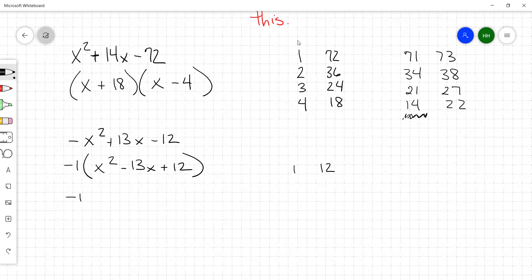So, negative one times we've got x and x. Now, this 1 and 12, they need to multiply to a positive, but they need to add to a negative. When that's the case, they're both going to be negative. So, it's x minus 1 times x minus 12. So, key point here is when you see this negative, you've got to factor out a negative one, and then you can treat the problem like every other problem. So, when you factor out a negative one, don't forget to change the sign of everything inside the parentheses.